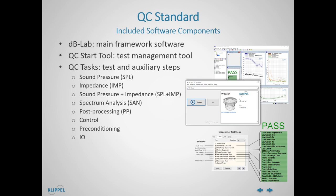The post-processing task processes results measured by previous test steps — for example, the difference curve between left and right. The control task is a framework task taking care of serial number handling, global routing, data logging, and many more. Pre-conditioning is a pre-excitation without measurement for DUT conditioning — for example, for ferrofluid tweeters, woofer break-in, or electronics wake-up. And finally, the IO task is a tool for conditional interaction with the operator or the hardware and software environment.